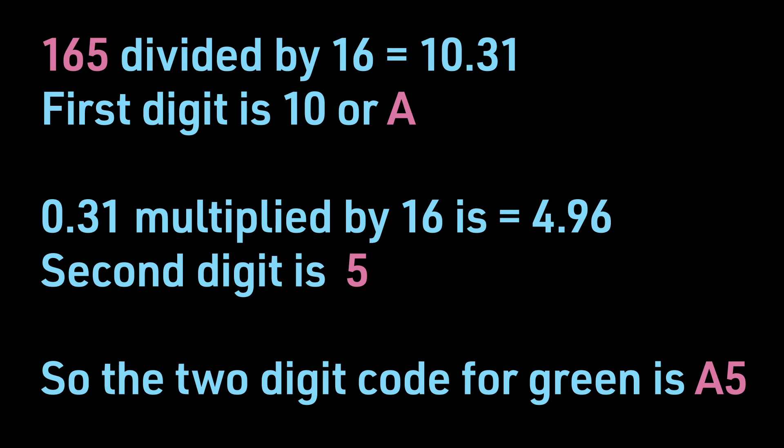For the next RGB value, for green, we would take 165 divided by 16 and get 10.31. The first digit is 10, or A. The fraction, 0.31, is then multiplied by 16 to get 4.96. Because we are looking at integers, the second digit would then be 5.